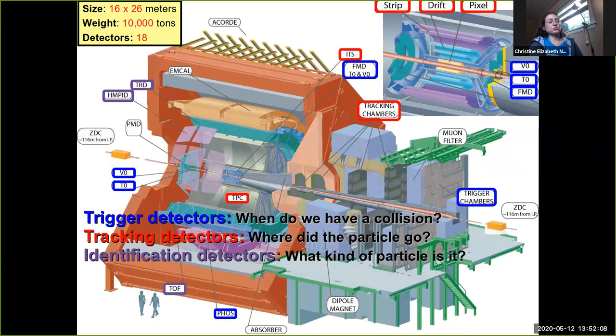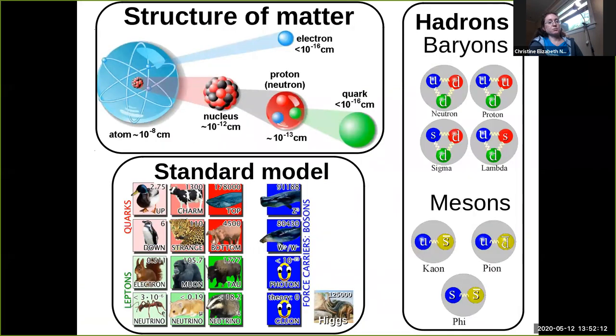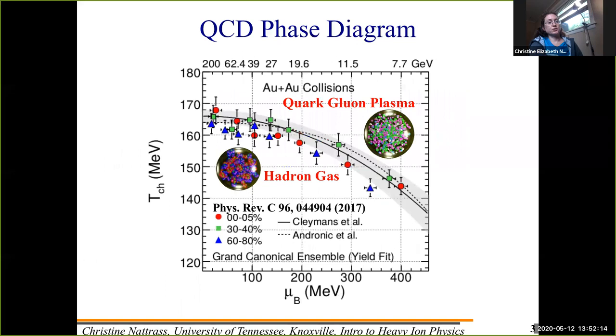So if you go back to one of the plots that I started with, this plot was from the relativistic heavy ion collider, and they've actually used those models to map out the point where you transition from the quark-gluon plasma to the hadronic gas.